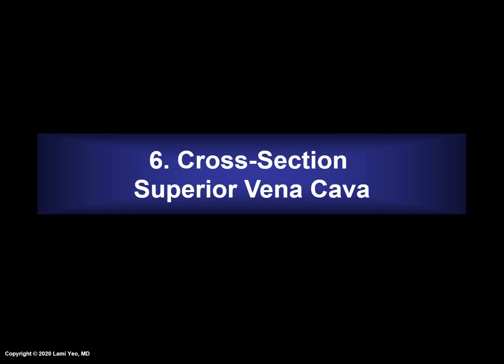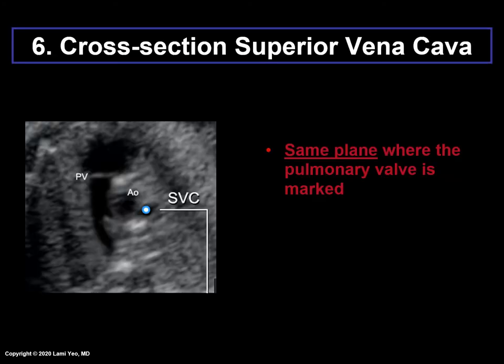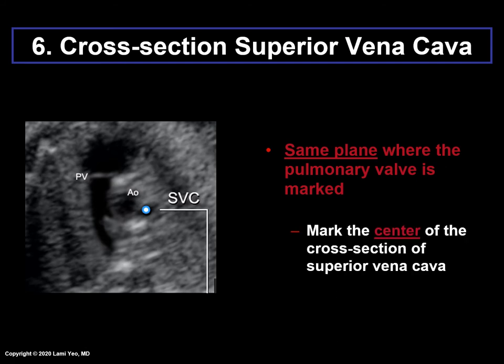The sixth structure to be marked is the cross section of the superior vena cava. This occurs in the same plane where the pulmonary valve was just marked. The user should mark the center of the cross section of the superior vena cava.